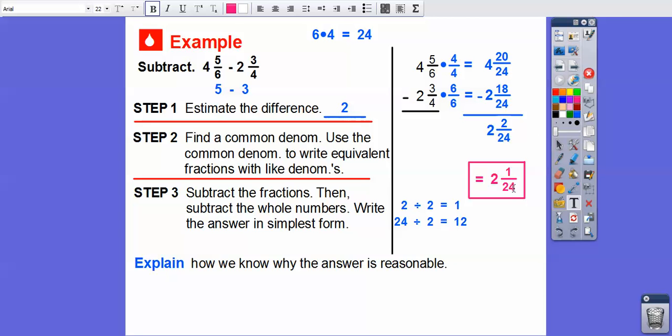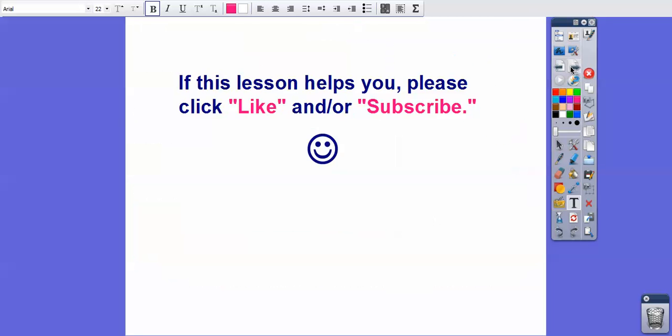So explain how we know that this answer is reasonable. Well, 2 and 1 twelfth is going to be close to 2, so we know it's going to be a reasonable answer right there. Since our answer is close to our estimate answer, then the answer is going to be reasonable. Hey, if you guys can, don't forget to click like. Take care, you guys.